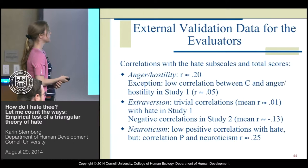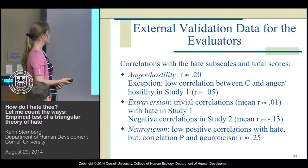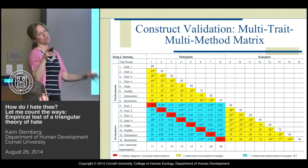The evaluator data essentially showed the same thing again — correlations of around 0.20 of the hate scale with anger and hostility, and trivial correlations for hate with extroversion, which were even slightly negative in the German study, with a mean of around minus 0.13.